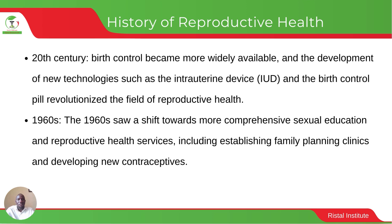In the 20th century, birth control became widespread and new technologies introduced IUDs and birth control pills. This caused a major shift in the field of reproductive health. In the 1960s, the movement was toward having comprehensive sexual and reproductive health services, including the establishment of family planning clinics and the production of more contraceptive methods.